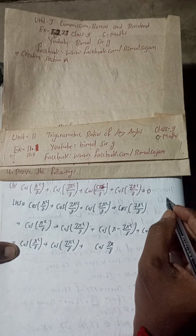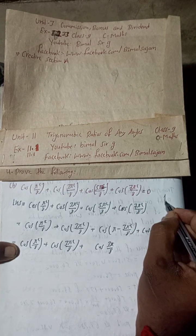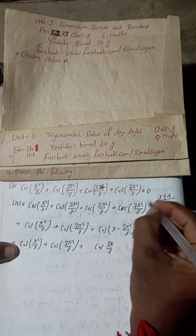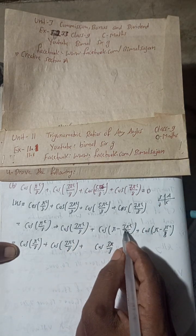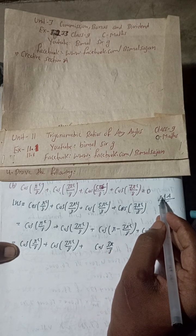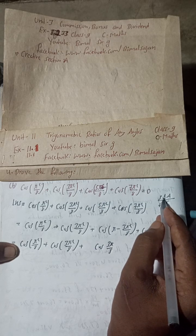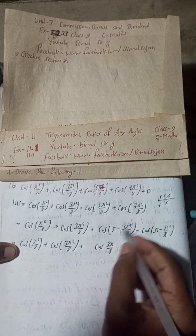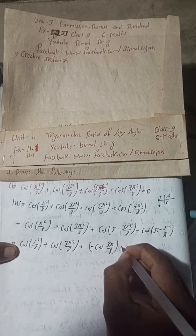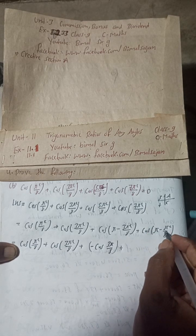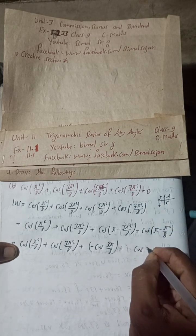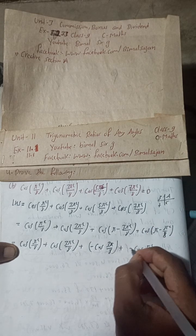Now this is in the second quadrant. As I told you already in part A, the CAST rule tells us that π − 3π/8 means it comes in the second quadrant. In the second quadrant, sine and cosec are positive, but cos is negative. So this term will be negative. Similarly, cos(π − π/8) is also in the second quadrant, so it will also be negative.